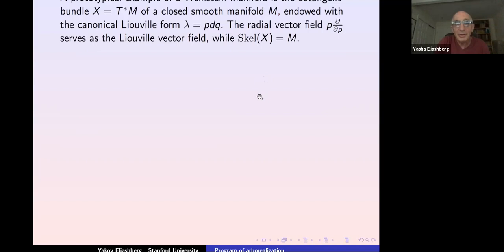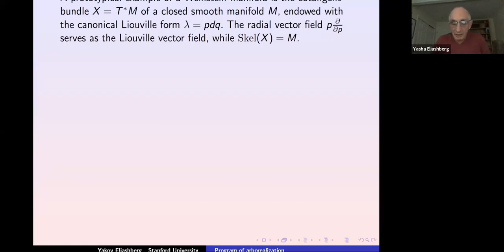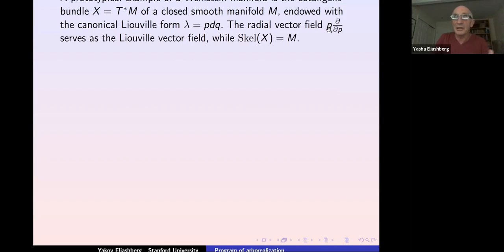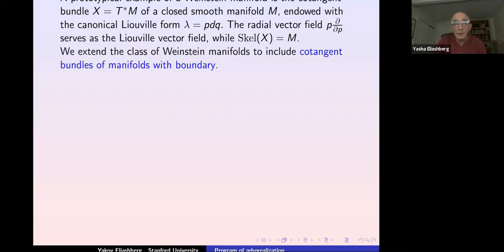The prototypical example of a Liouville–Weinstein manifold is the cotangent bundle T*M endowed with the standard Liouville form p dq and the radial Liouville vector field. This is precisely the Morse–Bott case, where the corresponding function is the square of the distance from the zero section. The skeleton in this case is exactly the manifold M. However, if M has boundary, the cotangent bundle T*M with the canonical Liouville form p dq is not a Weinstein manifold in the previous definition.